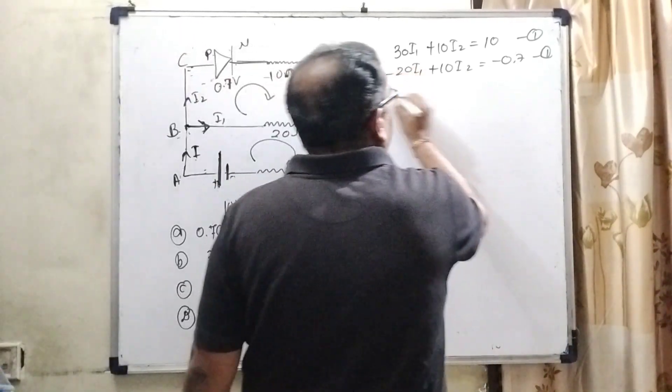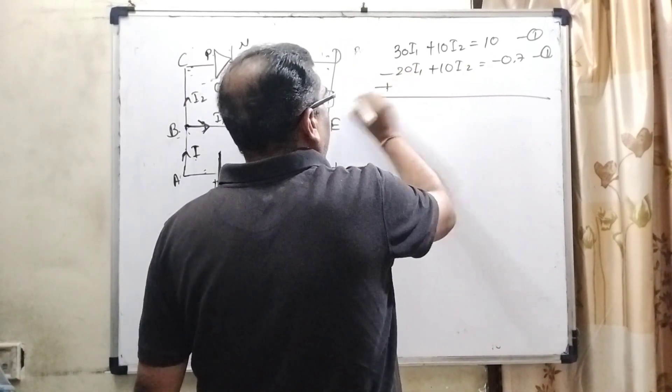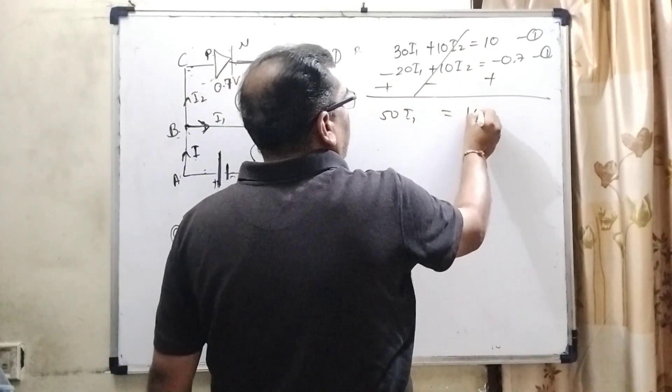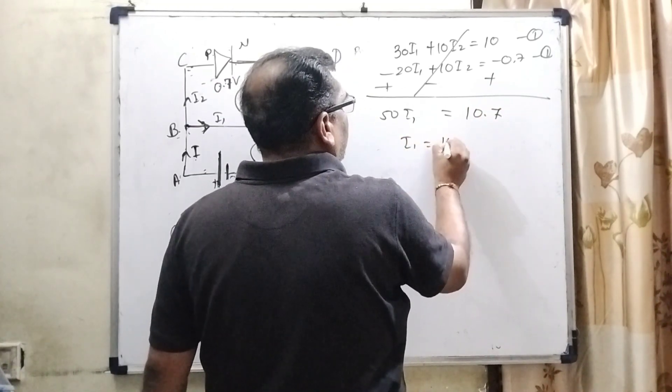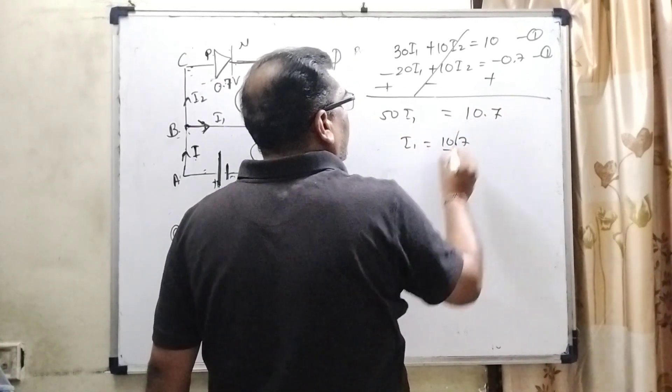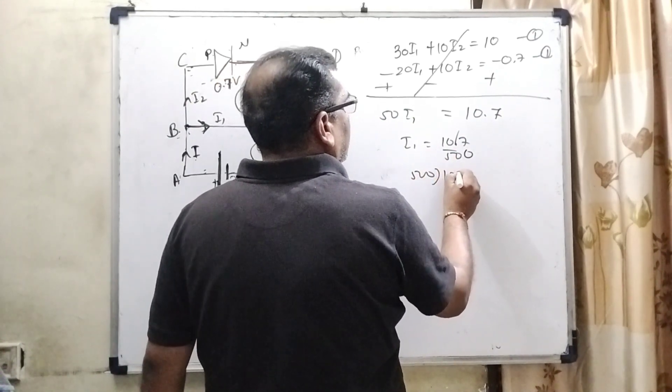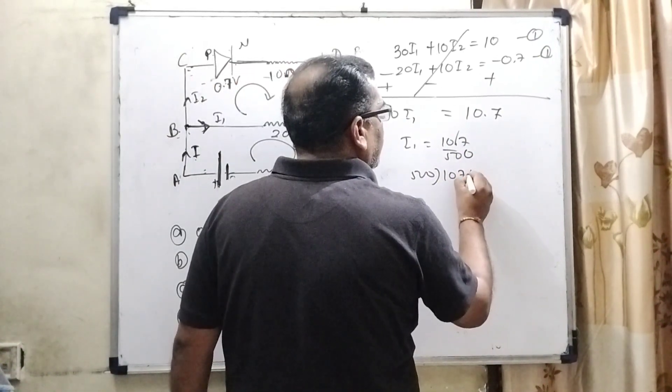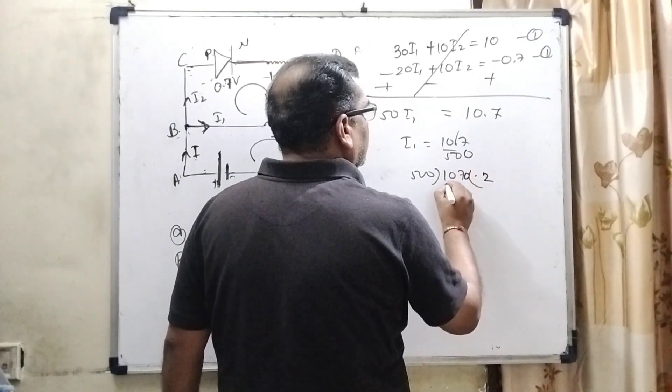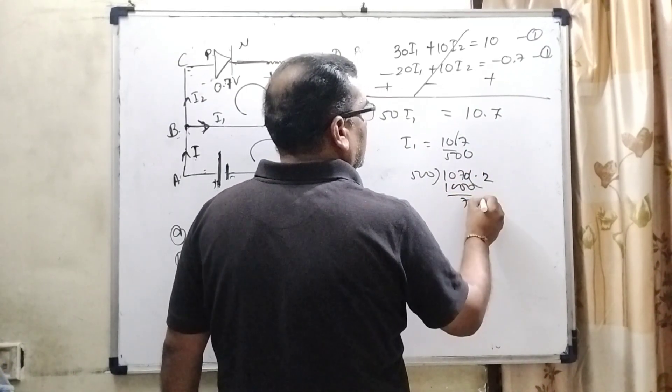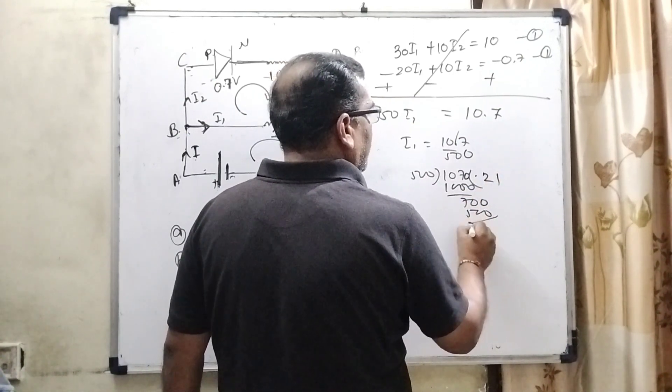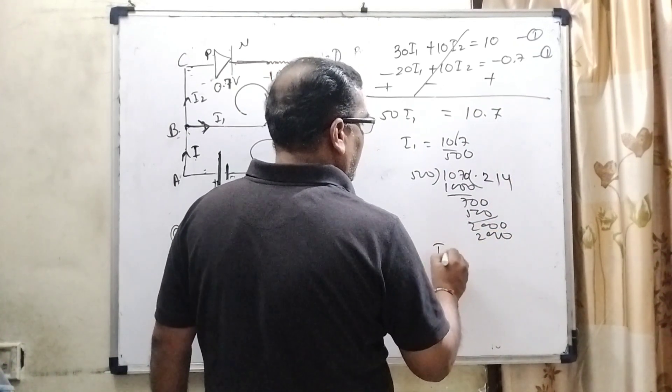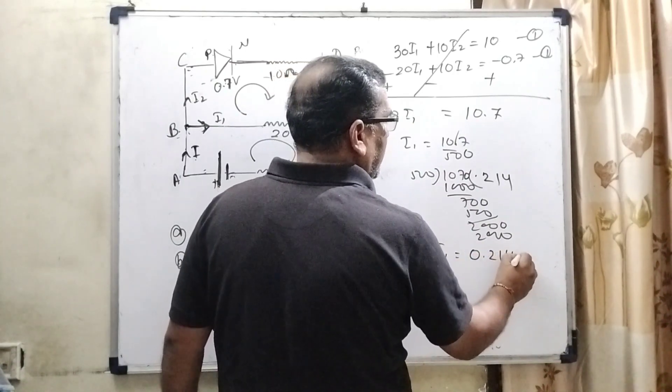Now solving first and second equation by subtracting, changing signs positive, negative, positive. This will cancel out, 30 and 20, 50I1 equals 10.7. I1 equals 10.7 divided by 50. Removing this decimal, this is 500 and 107, that is 0.214. So here I1 equals 0.214 ampere.